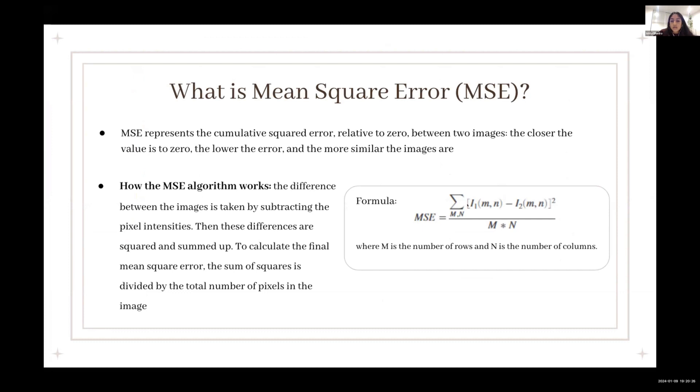And on the right is the formula, where m is the number of rows and n is the number of columns. How the algorithm works: the difference between the images is taken by subtracting the pixel intensity, and then the differences are squared and summed up. To calculate the final mean square error, the sum of the squares is divided by the total number of pixels in the image.